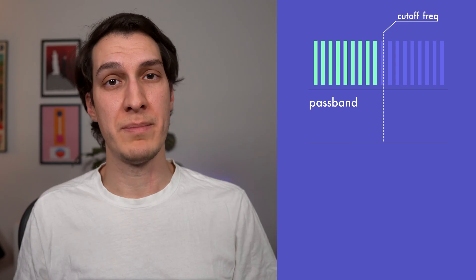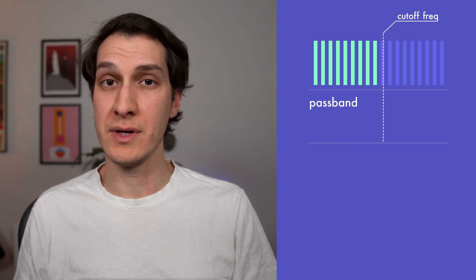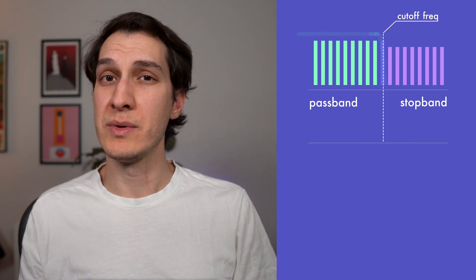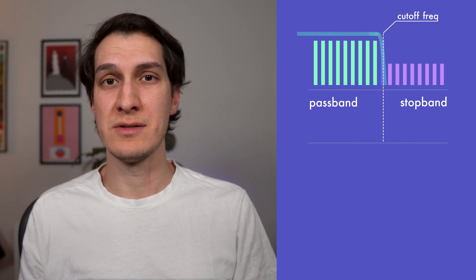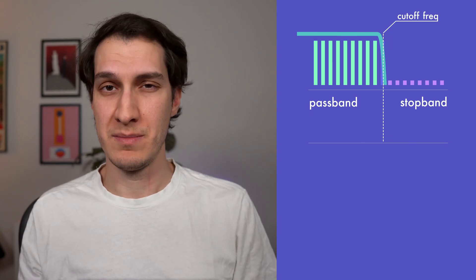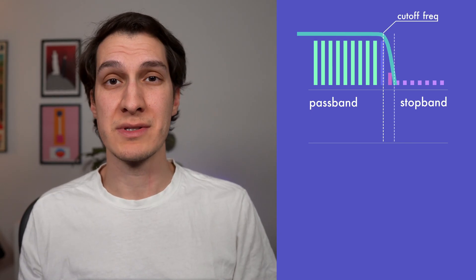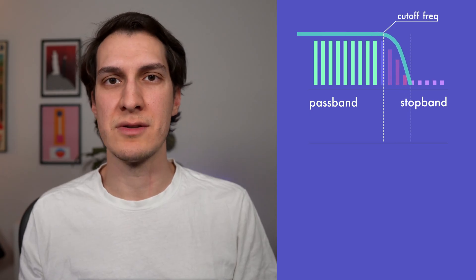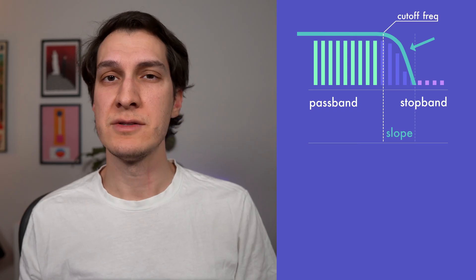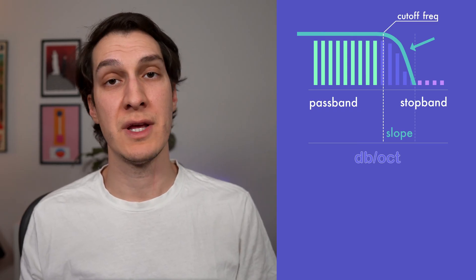The frequencies that a filter allows to pass are called the pass band, and similarly the frequencies that the filter blocks are called the stop band. Ideally we would want all the frequencies in the stop band to be infinitely attenuated, or basically muted. In reality that is impossible, so the attenuation happens gradually the deeper we get into the stop band. This rate of attenuation is called the slope of the filter, and it's usually expressed using the unit of decibels per octave.